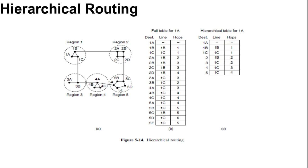They have shown that the optimal number of levels for an N router network is ln N, requiring a total of e ln N entries per router. They have also shown that the increase in effective path length caused by hierarchical routing is sufficiently small that it is usually acceptable. That's all for hierarchical routing.